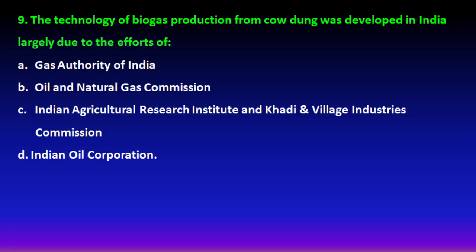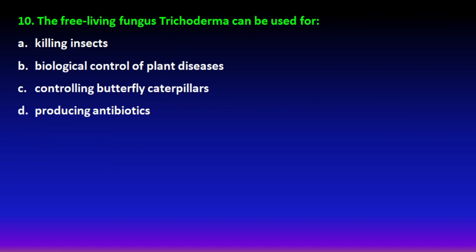Next question: the technology of biogas production. Biogas plants produce biogas from cow dung, and in India the two organizations involved in developing this technology are IARI and Khadi Village and Gram (Rural) Industries Commission. So option C is the right answer.